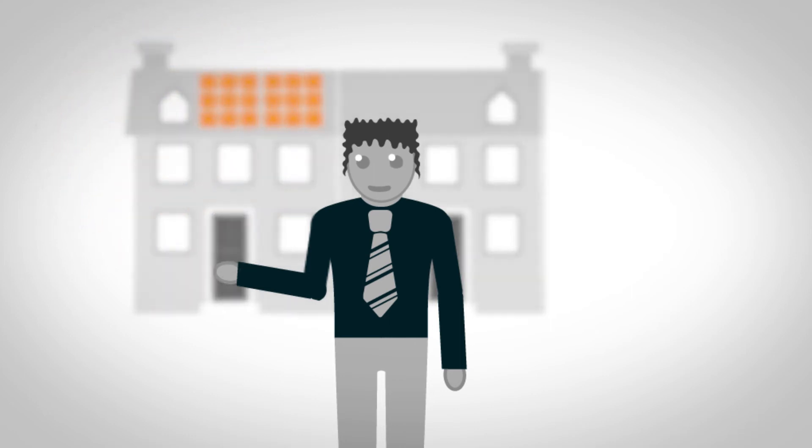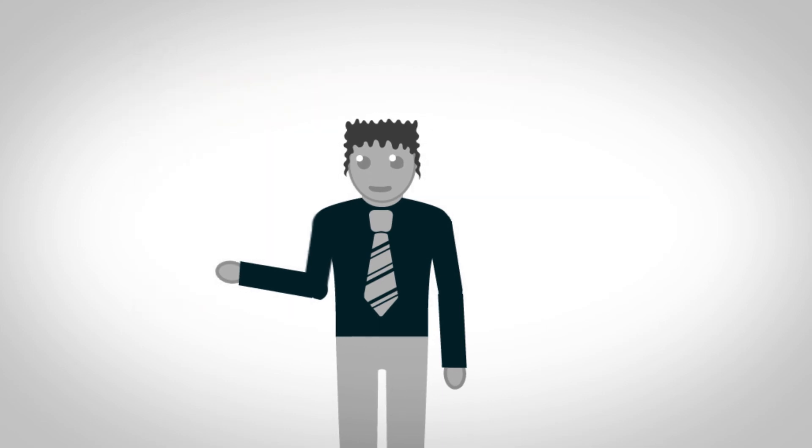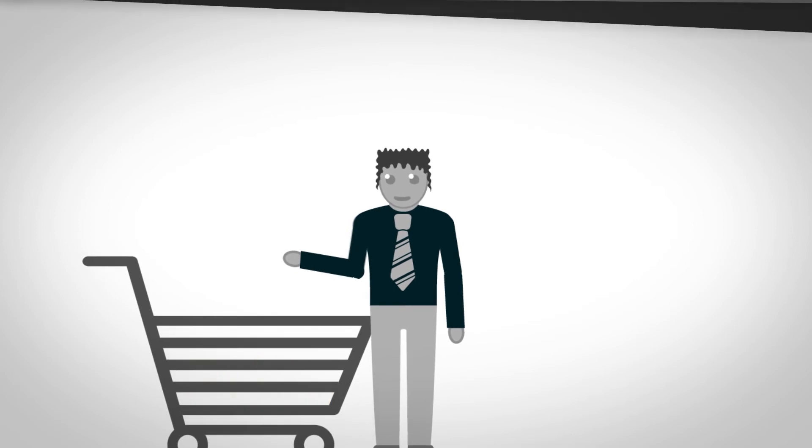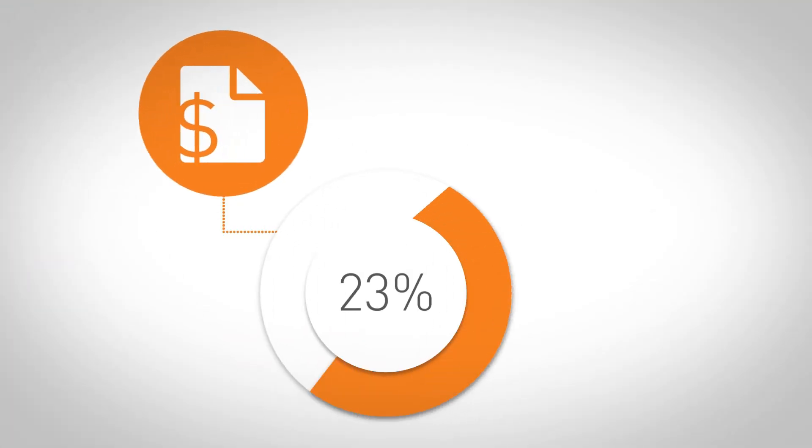Joe simply talks to the Smiths and receives immediate approval to purchase 30% of all solar energy generated. This covers 60% of his overall consumption and greatly reduces his energy bill.